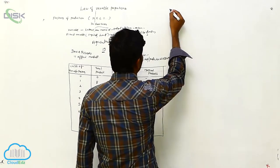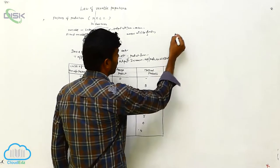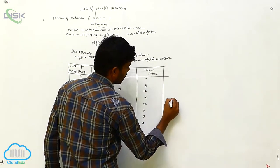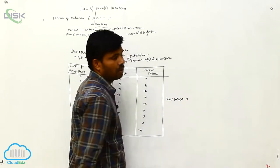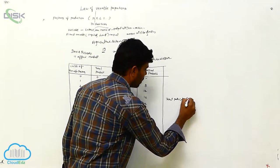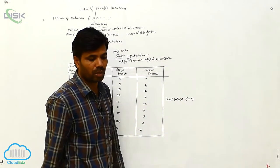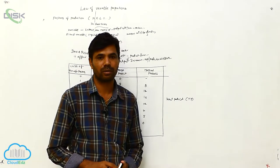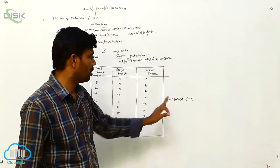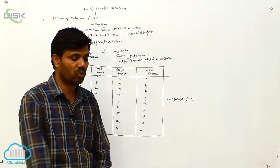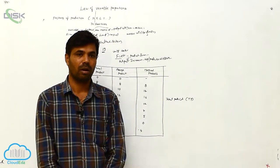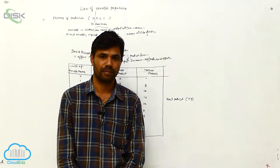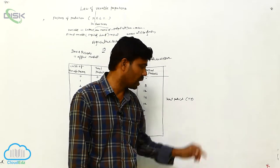What do you mean by total product? Total product means the combination of production using all the variable factors. That is called total product. It is indicated as TP.